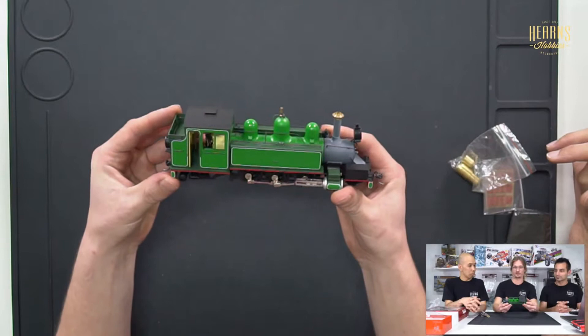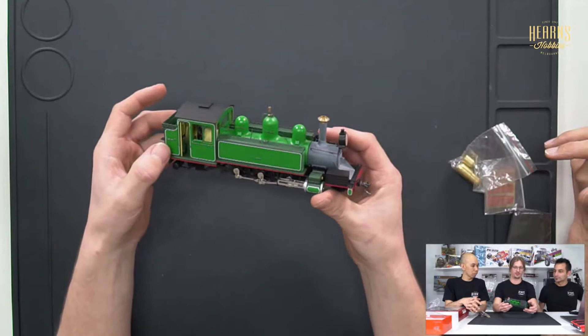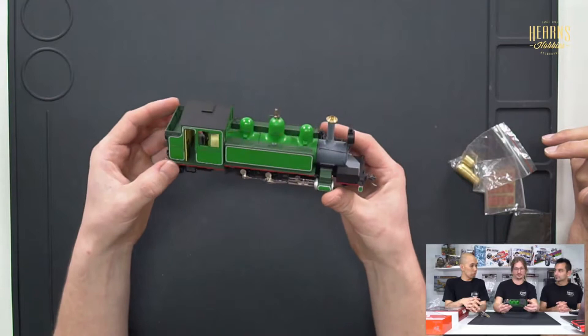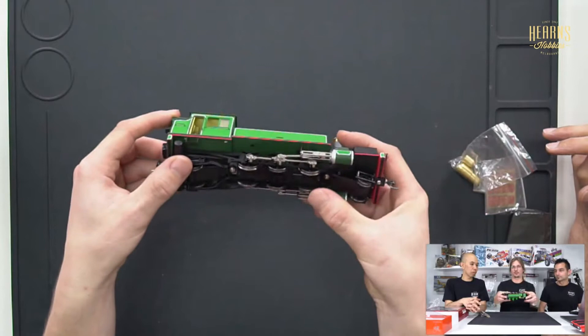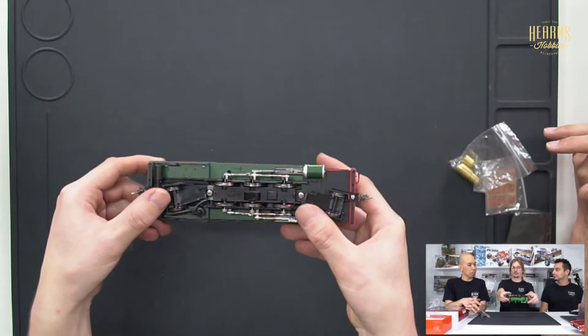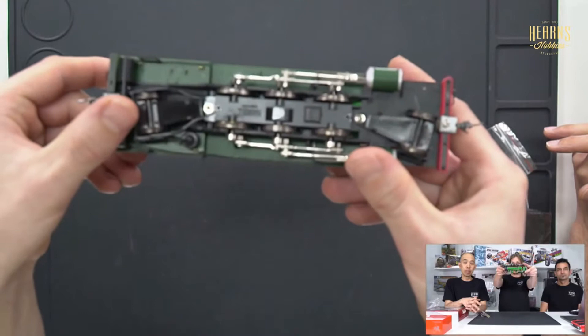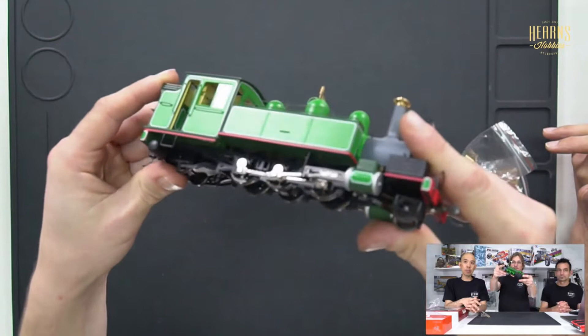These particular locomotives are O30 scale, which is O gauge, 1 to 48 scale, but it's narrow gauge. That's a reference to the width between the wheels. This is scaled to two foot six inches and you can see that's really narrow. The wheels ride inside the chassis.